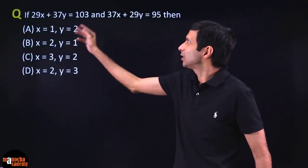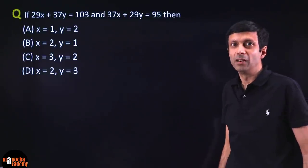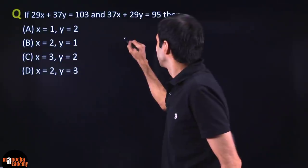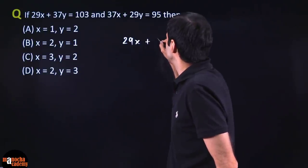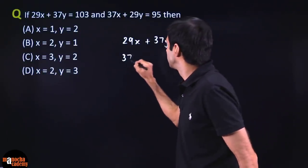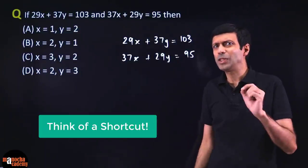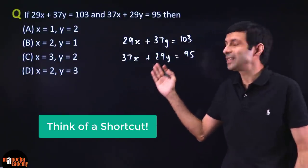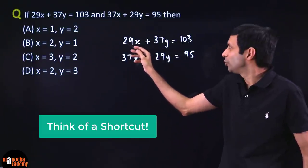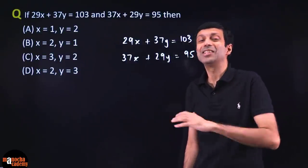Next question: if 29x + 37y = 103 and 37x + 29y = 95, find the value of x and y. You might wonder how to solve these with such large numbers. The trick is that these equations have criss-cross coefficients — 29 and 37 swap positions. So add and subtract the equations. When you add them, you get 66x + 66y = 198, which simplifies to x + y = 3.